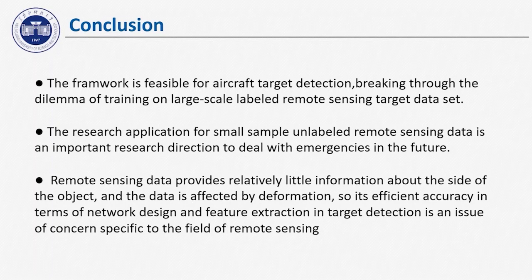Remote sensing images are widely researched and used for their large-range and multi-channel information collection. But in practice, there are few labeled images available for certain tasks, and the labeling of images requires a lot of manpower and material resources. Therefore, research on small sample and unlabeled remote sensing data is an important research direction for dealing with emerging challenges in the future. Remote sensing data provides wide-area information about the location of objects, and the data is affected by different conditions, so its effectiveness will increase in terms of network design, feature extraction, and target detection in the field of remote sensing.